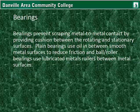Bearings prevent scraping metal-to-metal contact by providing cushion between the rotating and stationary surfaces. Plain bearings use oil in between smooth metal surfaces to reduce friction, and ball or roller bearings use lubricated metal rollers between the metal surfaces.